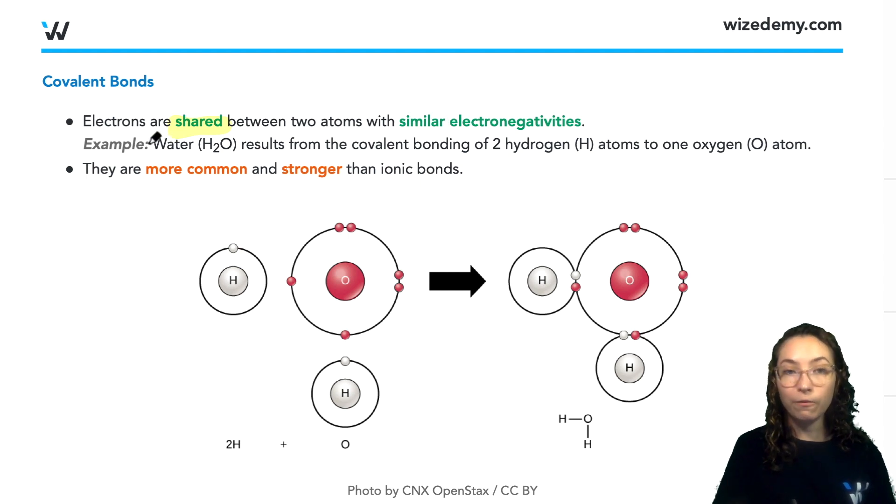One great example of this is a very common molecule, very abundant in our bodies, which you know as water. This is formed by the covalent bonding of two hydrogen atoms and one oxygen atom. So you can see that as an example down here.